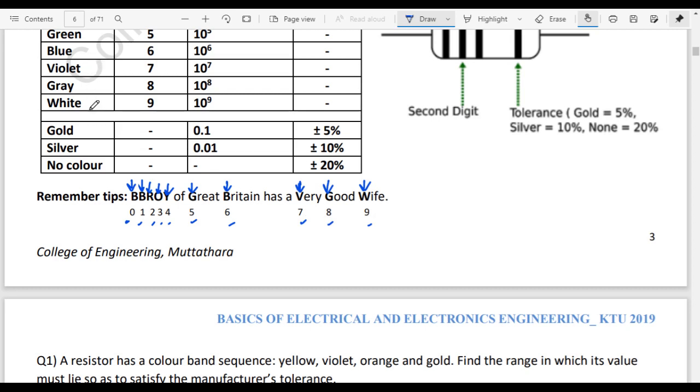Let's ask questions. If gold is 0.1, that is 10 raised to minus 1, that is the multiplier. If silver is 10 raised to minus 2, that is 0.01.